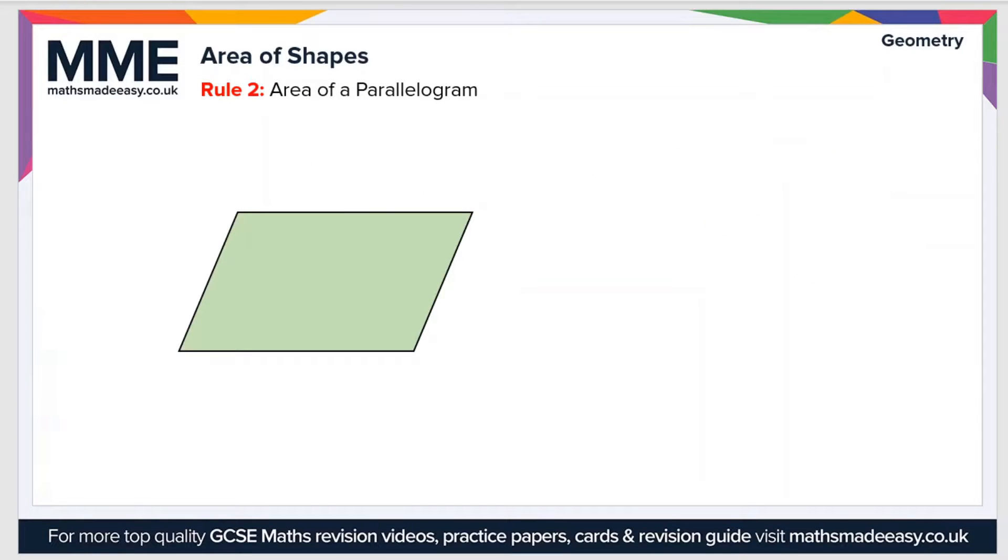Moving on to Rule Number 2, which is the area of a parallelogram. To calculate the area of a parallelogram, you take the width of the base, let's call it b, and you take the perpendicular height, which we'll call h. Then the area is just the base times the perpendicular height. That's all there is, and again the units will be either meter squared, centimeter squared, etc., depending on what the units of b and h are.